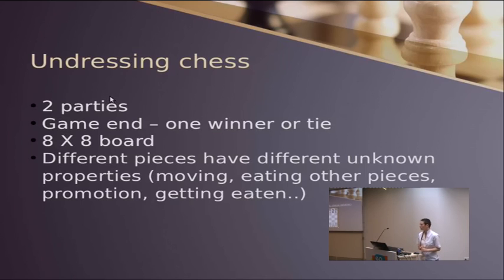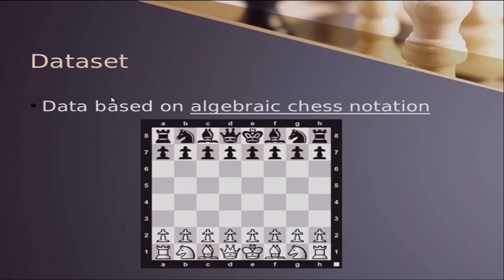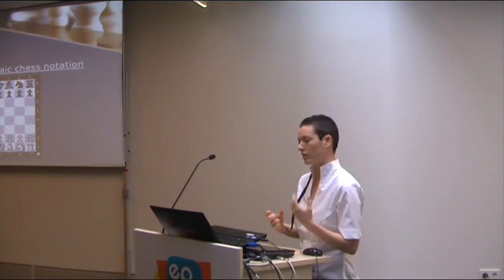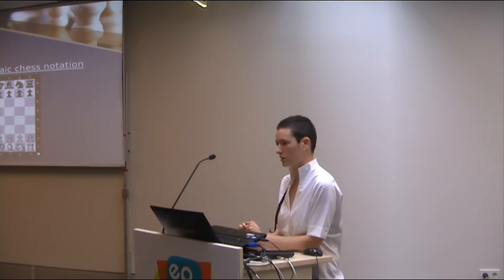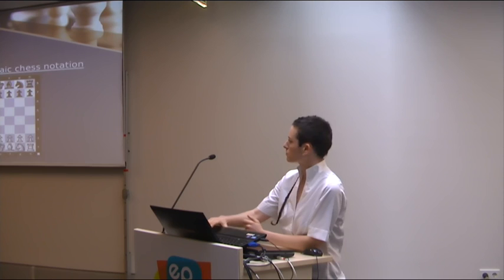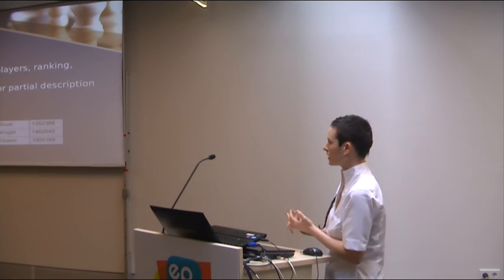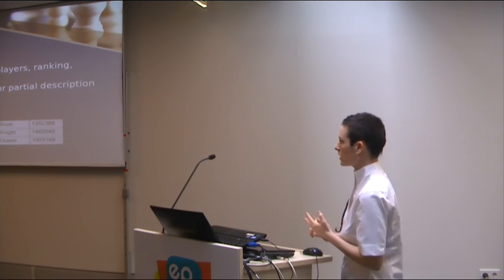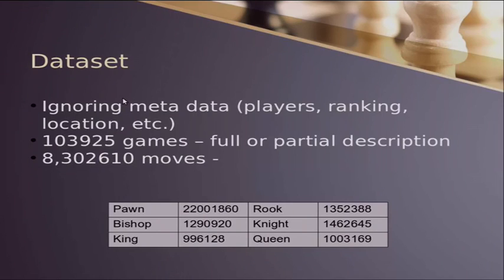The dataset we worked on is given in algebraic chess notation. If we have some time in the end, I'll show you how it looks like, but the idea is that every square on the board is represented by a letter A to H and the number 1 to 8, and the move is basically done from one square to another. Usually only the destination square is written when there is only one piece that can do that move, or if it's not clear, then both the destination and the source square is written. We ignored the metadata on this set, such as player ranking, location, and so on. We had just a bit more than 100,000 games with full or partial description. There were many games that didn't end either with a checkmate or a tie, just ended in the middle.